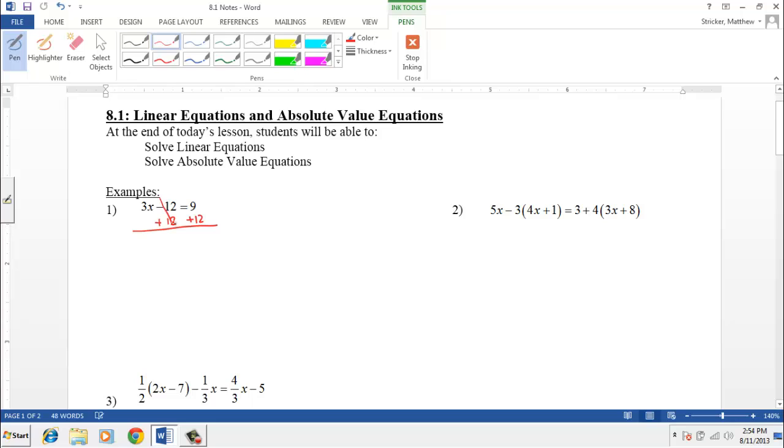And the 12s cancel, and we're left with 3x equals 21. We have 3 multiplied by x. The way we undo multiplication is to do the opposite operation of dividing by 3. If we do it to one side, we have to do it to the other, which gives us x is equal to 7.